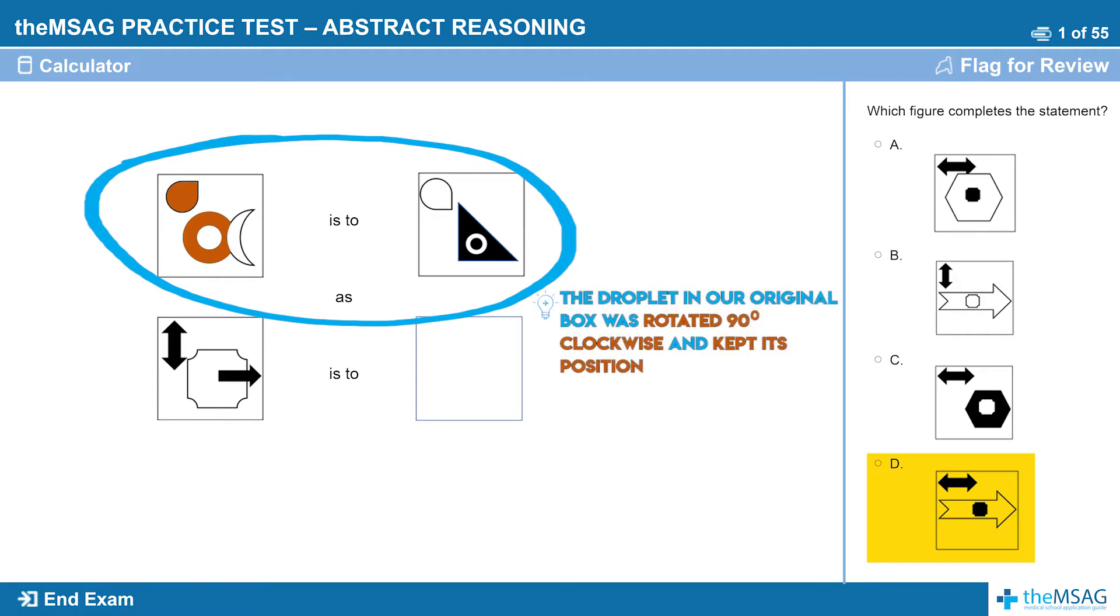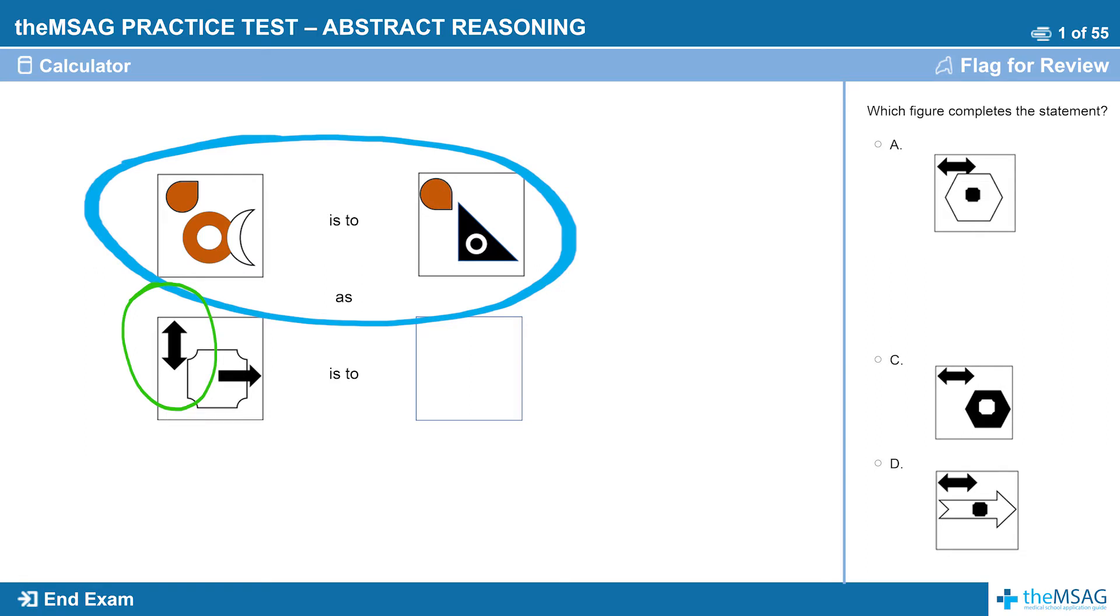The droplet in our original box was rotated 90 degrees clockwise and kept its position. Hence our two-headed arrow needs to be rotated 90 degrees clockwise and also keep its position. This eliminates the second test shape whose two-headed arrow has not rotated.